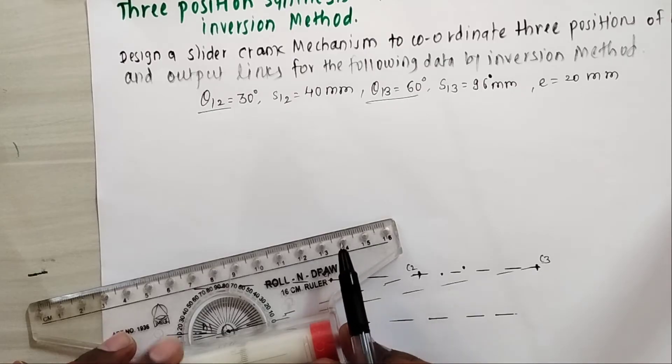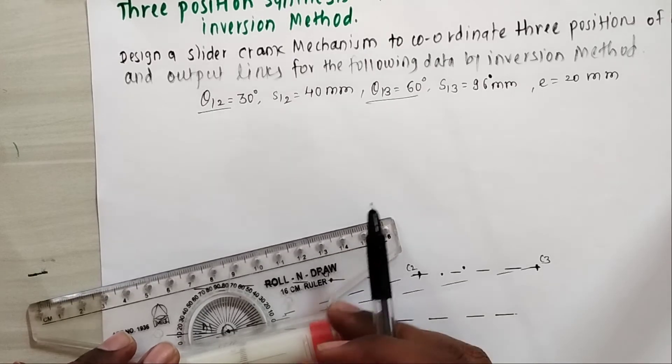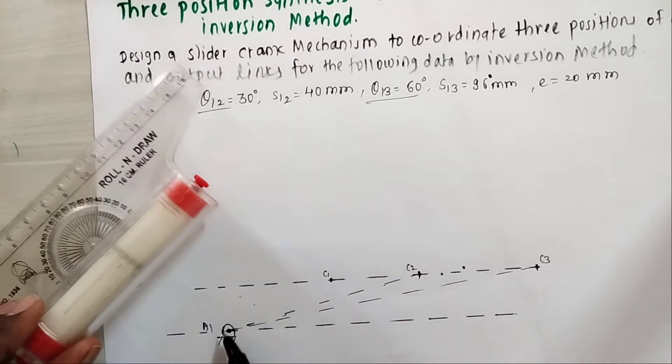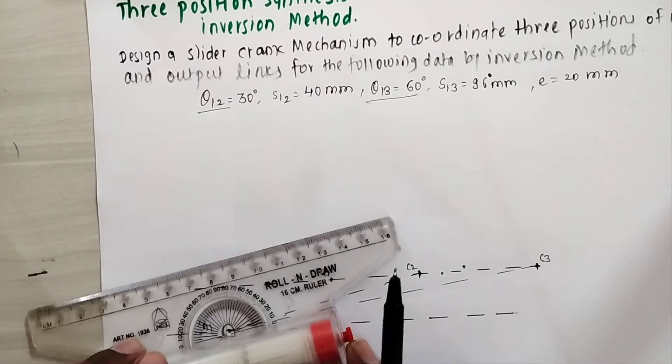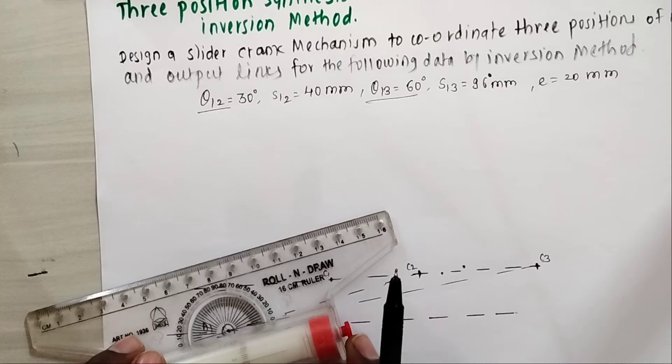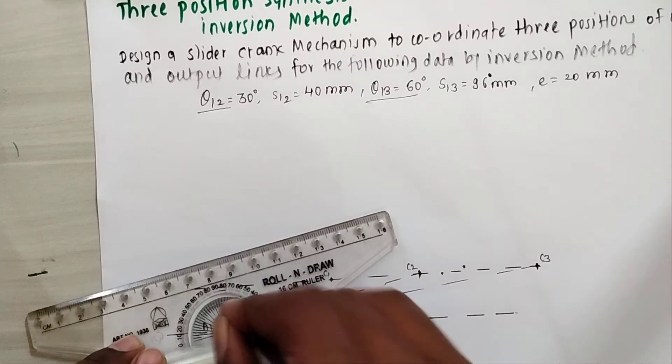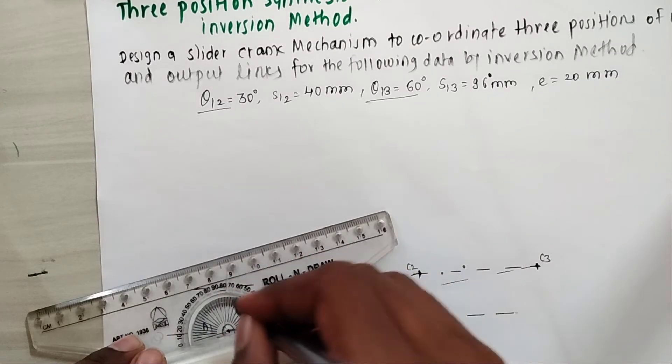I am marking these angles θ12 and θ13 from the lines A1C2 and A1C3 with respect to those lines. This is θ12 and this one is θ13.